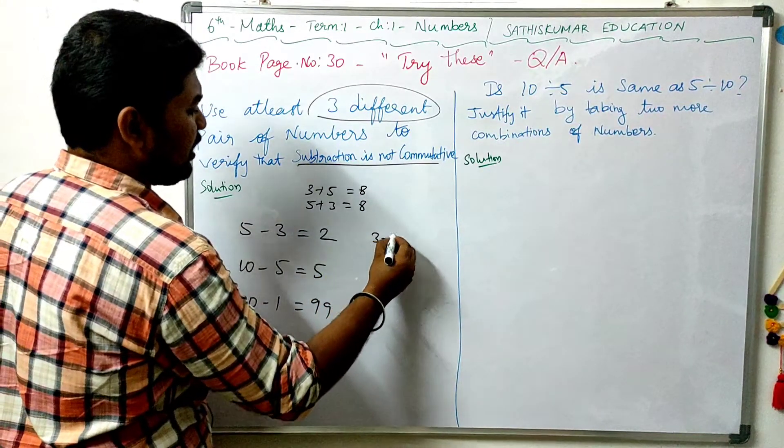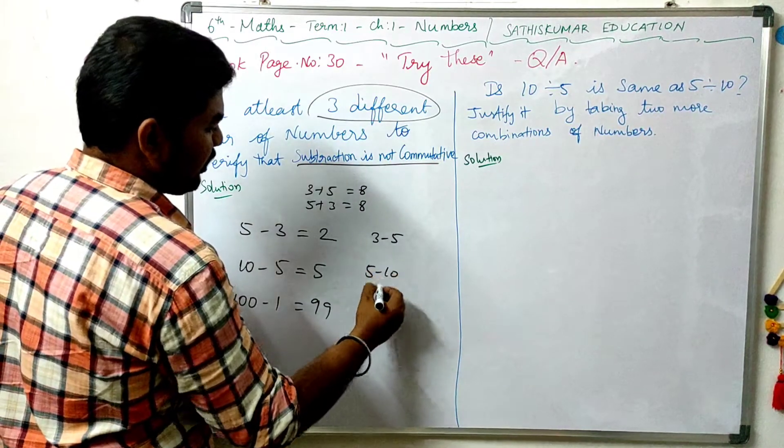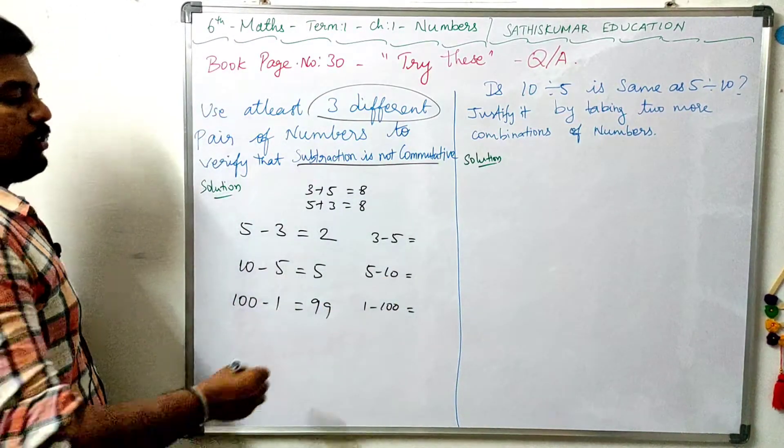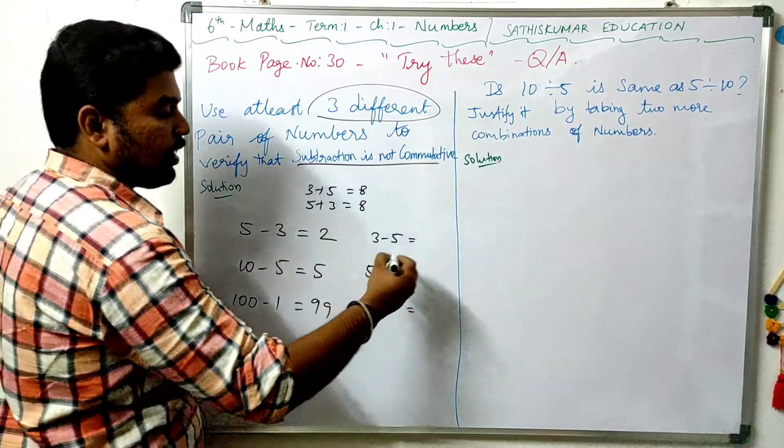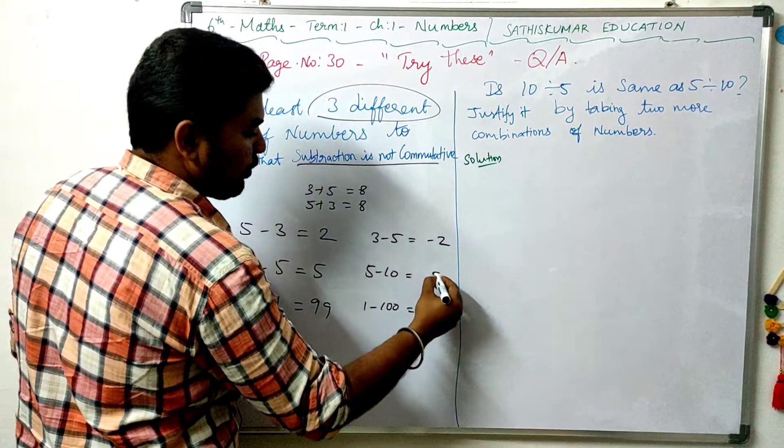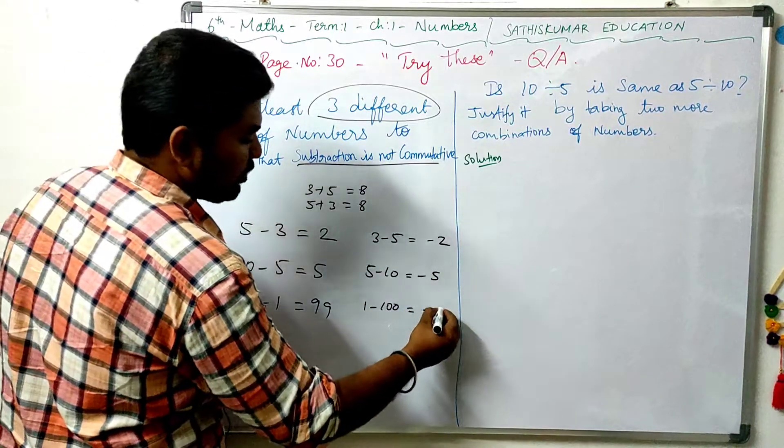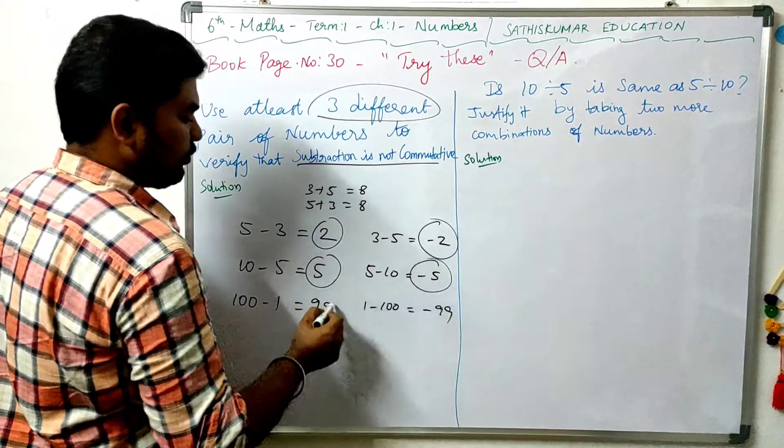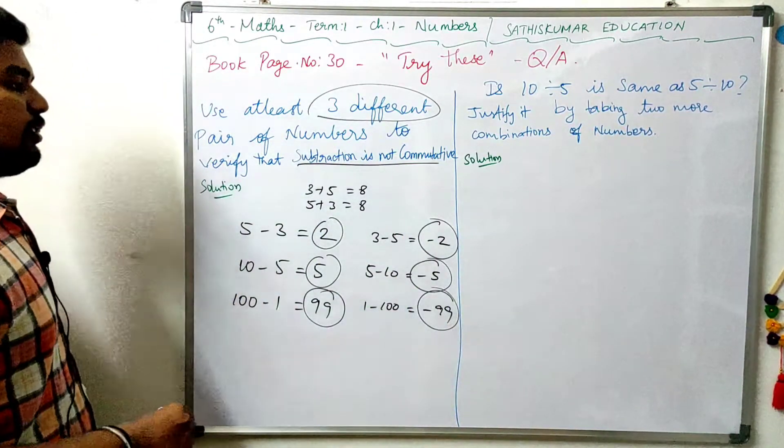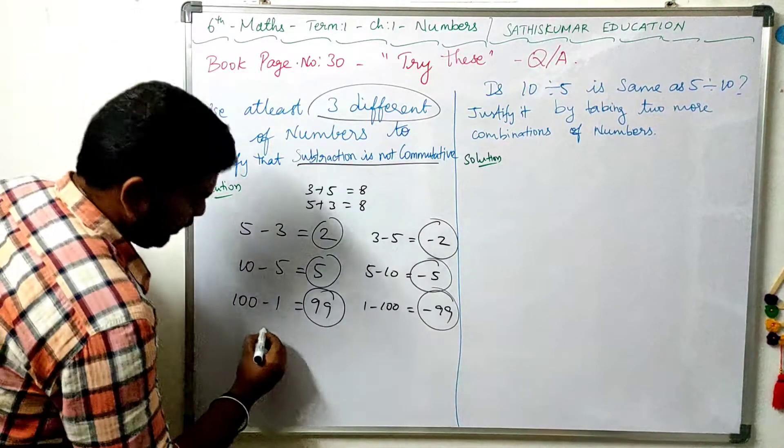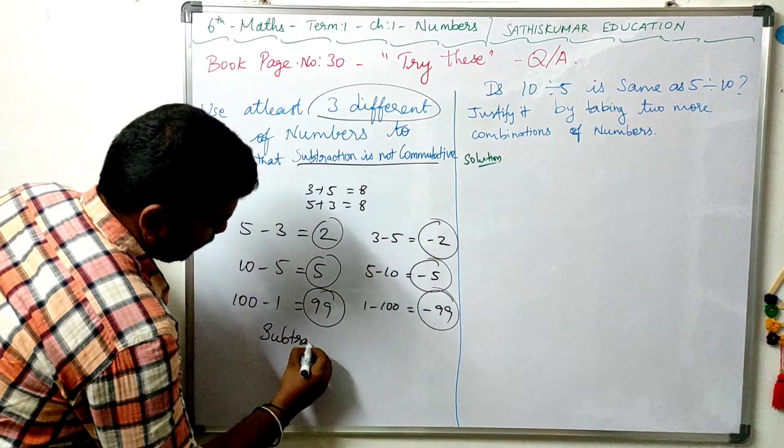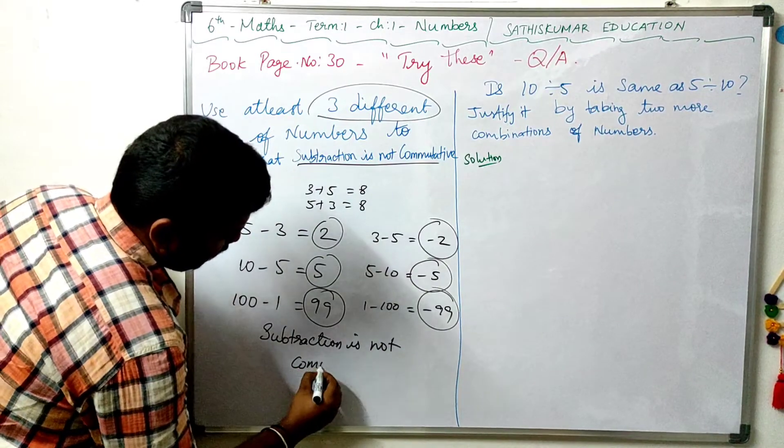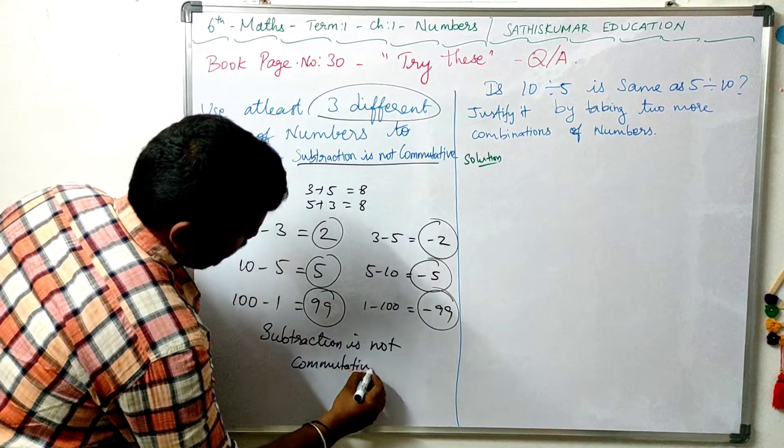Let's go. 3 minus 5, 5 minus 10, 1 minus 100. This is not the same. So, subtraction is not commutative.